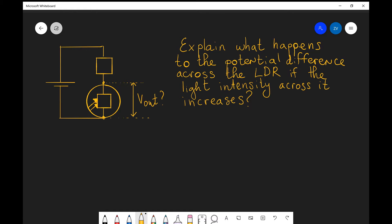Hi everyone, welcome back to ASFC Physics. What we're going to be looking at is another potential divider example. We have the following circuit, we have a cell which is connected to a fixed resistor and an LDR.